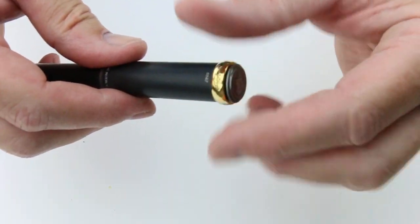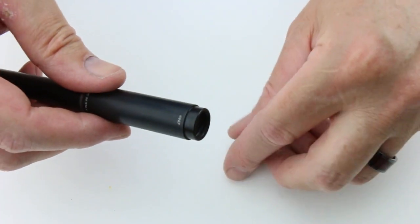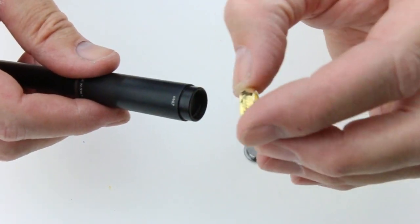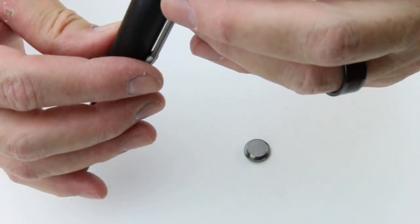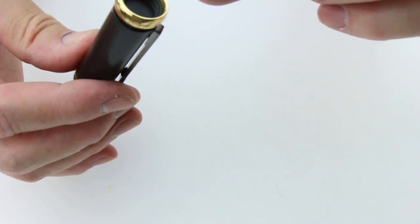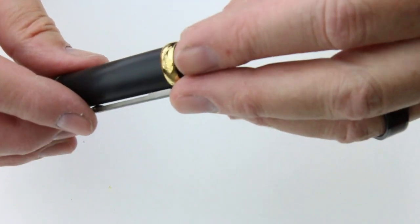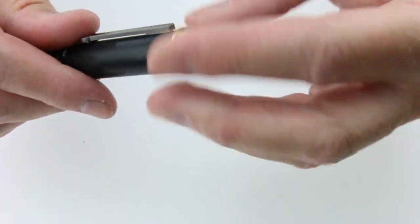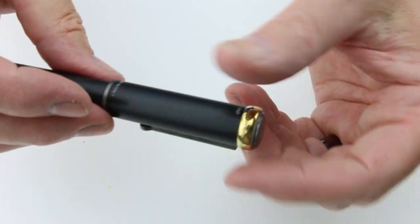This ring actually comes off the top of the pen, so it unscrews and the ring is removable. There's a small little medallion, that Lord of the Rings logo that threads or screws into the top of the pen and holds that in place.